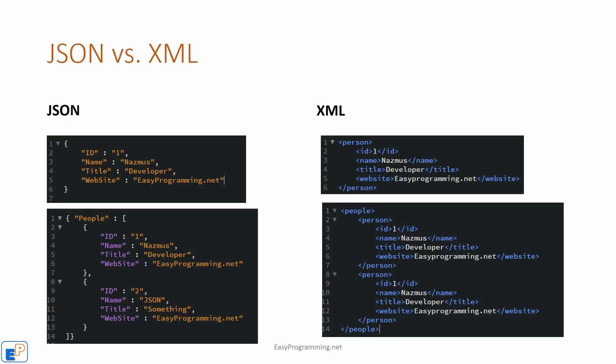JSON is unlike XML because JSON doesn't use an end tag. JSON is much shorter and it's usually quicker to read and write for both machines and people. The biggest difference between XML and JSON is that XML may need to be parsed using an XML parser, whereas JSON can be parsed by a standard JavaScript function. That's one of the biggest differences.